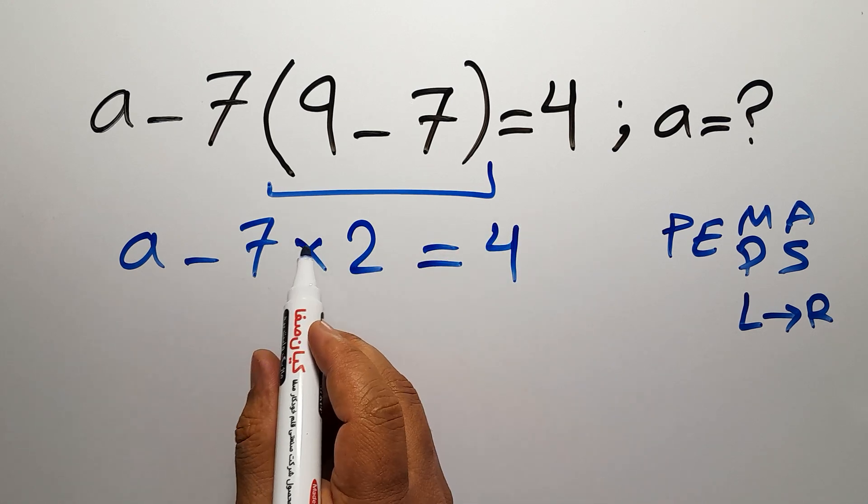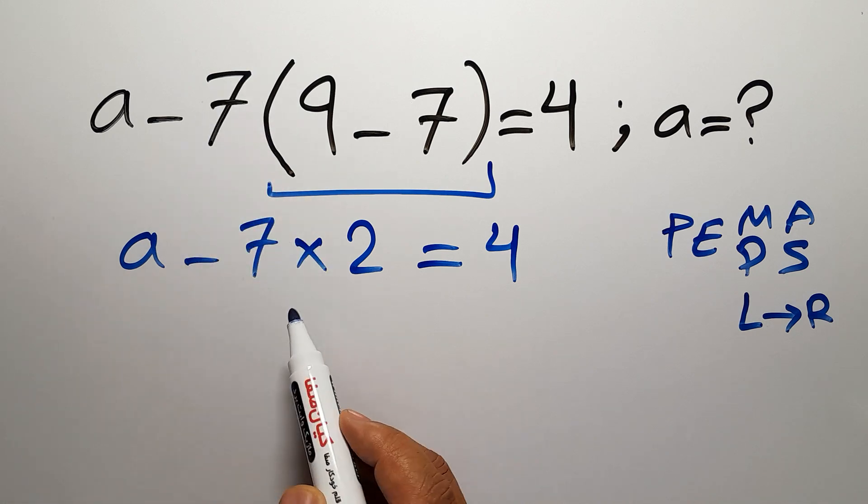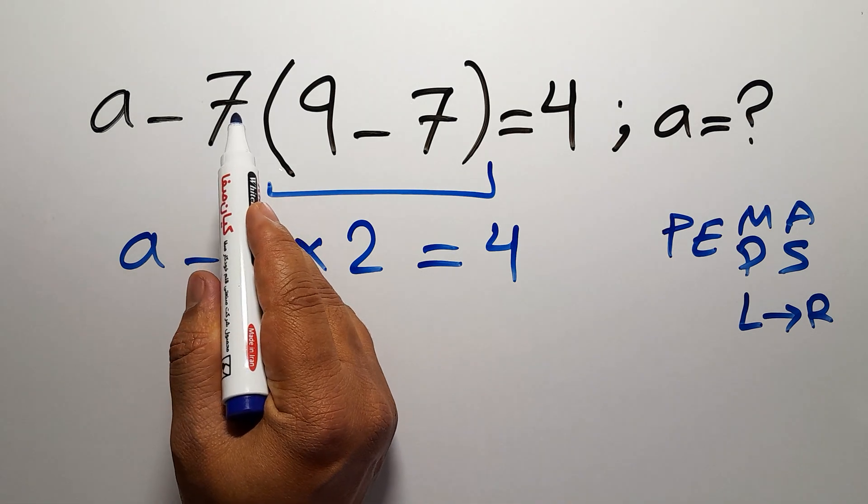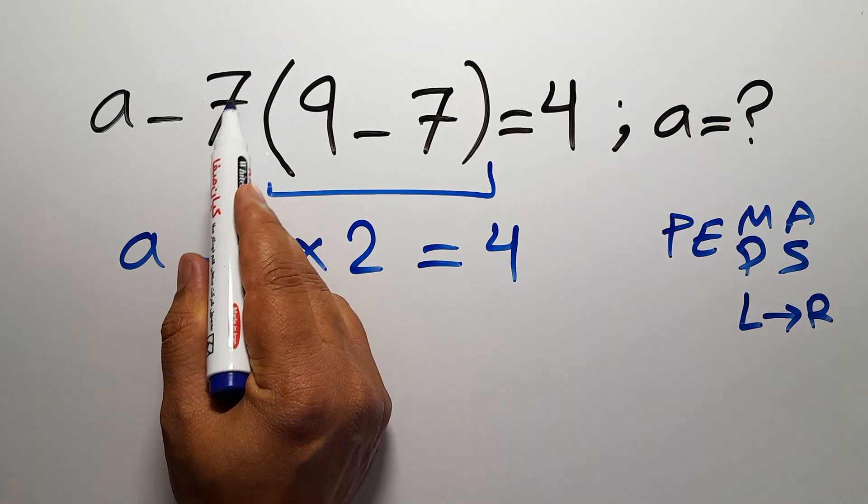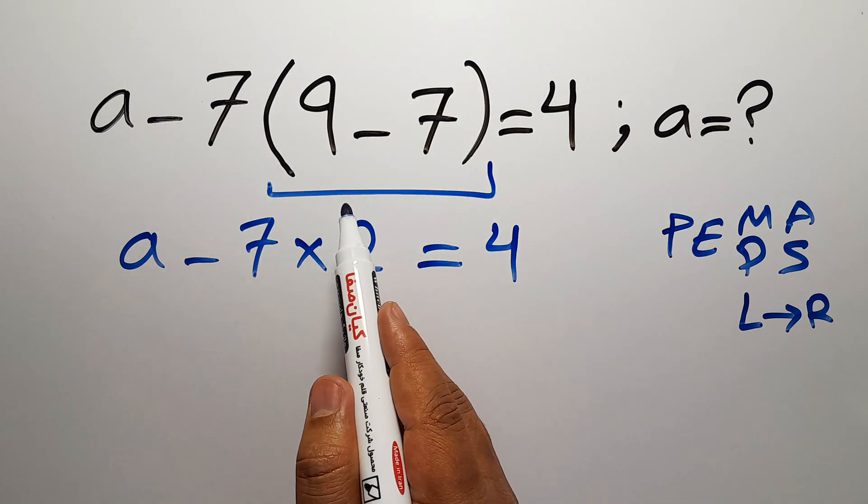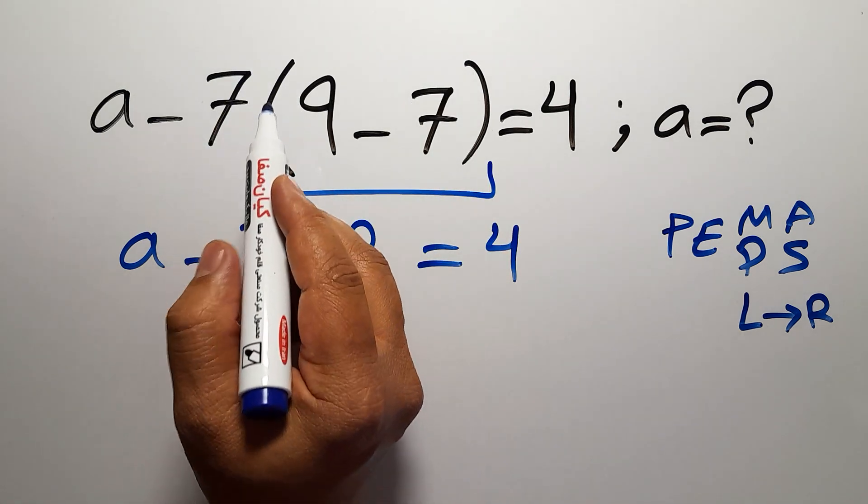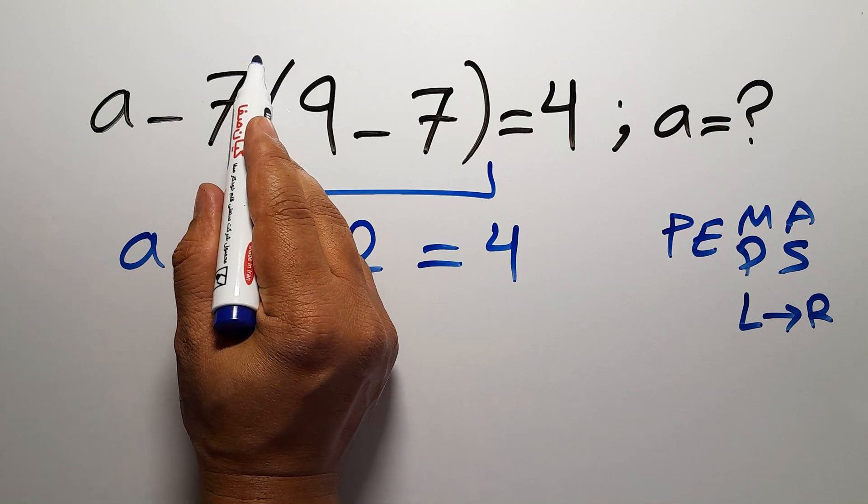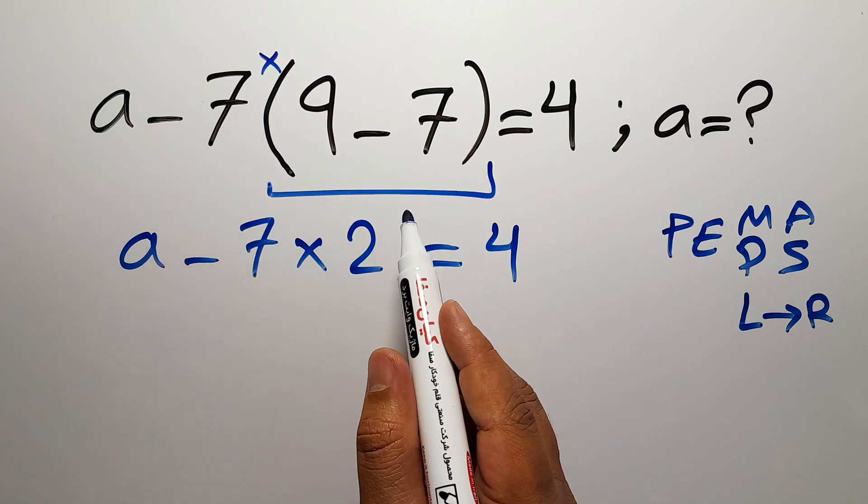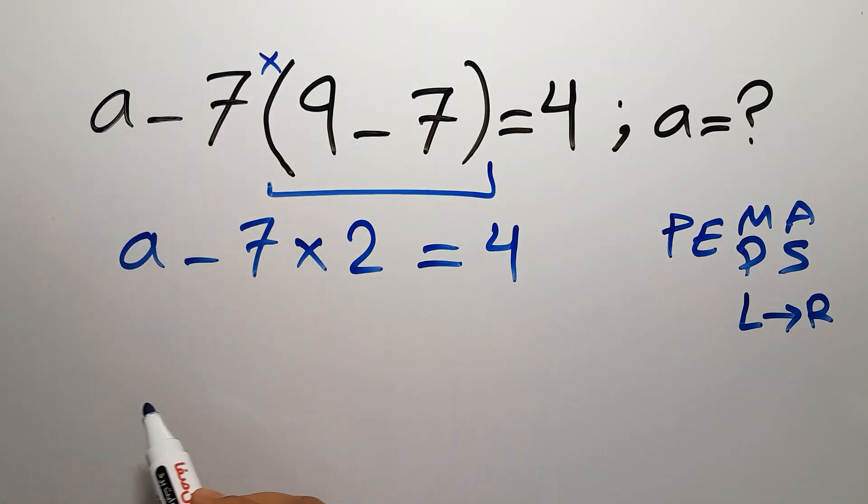We need to pay attention that we have here a multiplication. Because in mathematics, when we have a number next to parentheses, it means multiplication. And we usually don't write this multiplication for brevity. So we have here a multiplication.